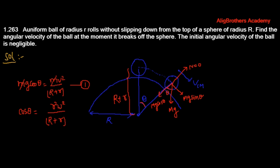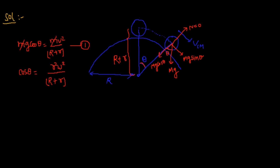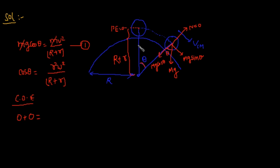We apply conservation of energy between the initial and final instants. Suppose this is the reference point for potential energy. At the initial instant, potential energy is zero and kinetic energy is also zero. At the final position, suppose the height from the reference point is H.